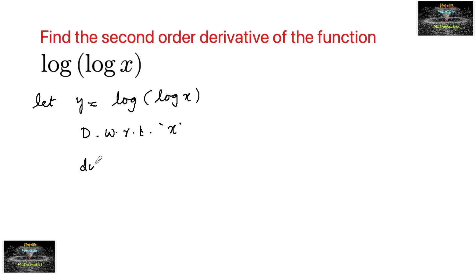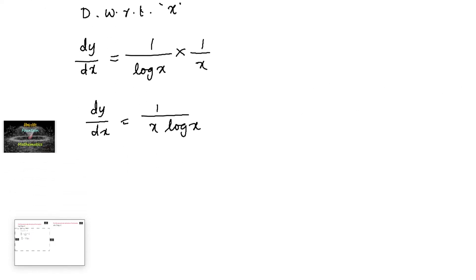So we have dy/dx equals differentiation of log(log x). Using the chain rule, differentiation of log is 1/log, then differentiation of log x is 1/x. So we can write dy/dx equals 1/(x log x).